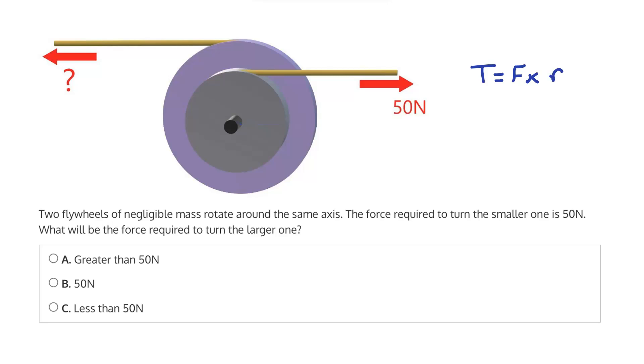So we know, well first we can say this smaller flywheel is flywheel A, and this larger one is flywheel B. And we know that the radius of B is greater than that, than A.